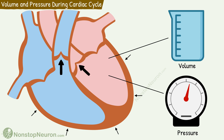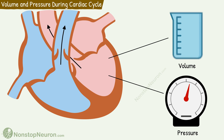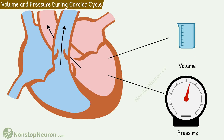Then semilunar valves open and blood starts flowing from the ventricles to the major arteries, so volume falls during this. Pressure initially rises as ventricles continue to contract, then as ventricles start relaxing, the pressure falls.